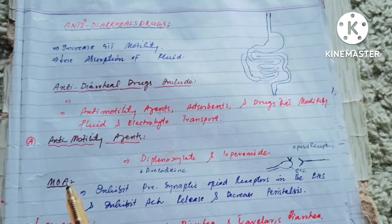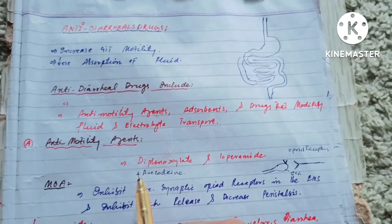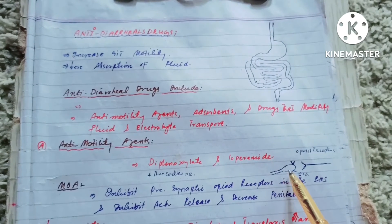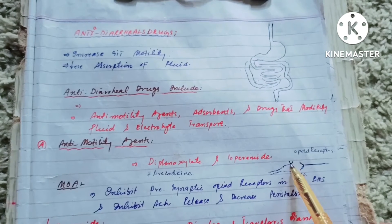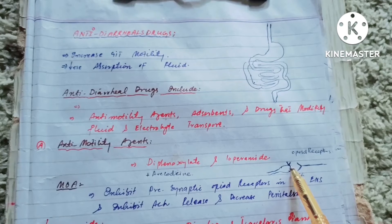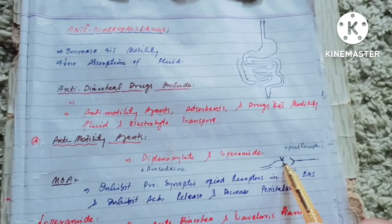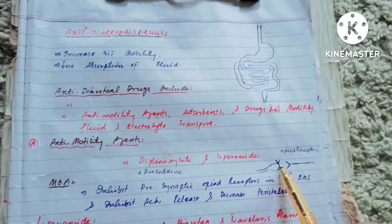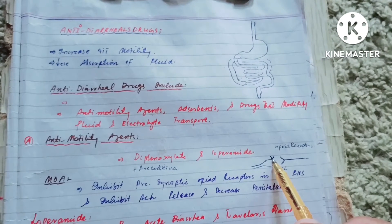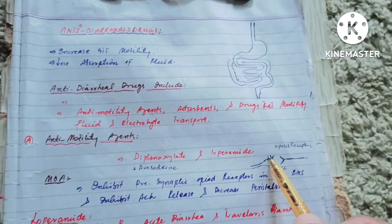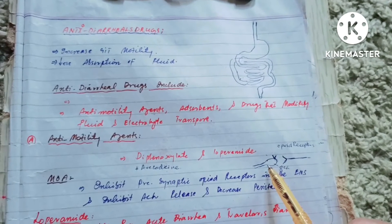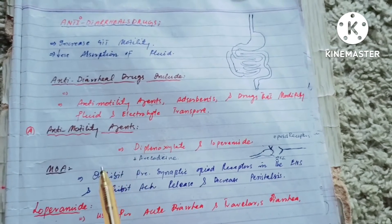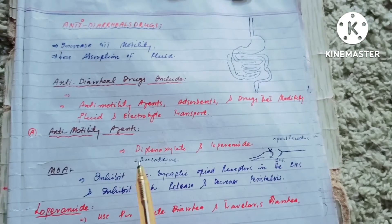What is the mechanism of action of diphenoxylate and loperamide? The intestinal tract has a special type of nervous system called the enteric nervous system, which has special presynaptic opioid receptors. When these opioid receptors are stimulated, they cause acetylcholine release, which increases motility. By inhibiting the opioid receptors, acetylcholine release is inhibited, so motility decreases. This is the mechanism of action for the anti-motility agents — the opioid receptor antagonists.